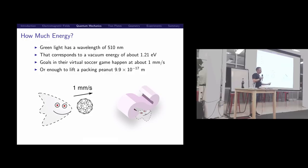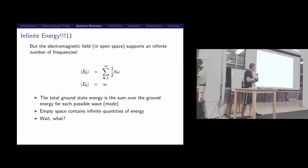We call this energy the vacuum energy, the zero-point energy, or the ground-state energy of the system. If you're wondering how much energy, green light has a wavelength of 510 nanometers. That's a vacuum energy of about 1.21 electron volts. This is really slow on a quantum mechanical scale.